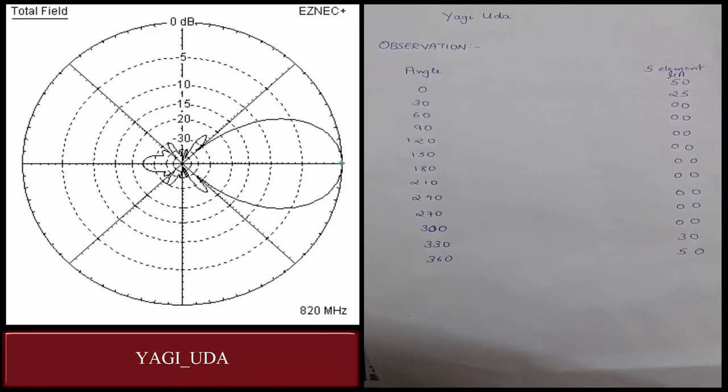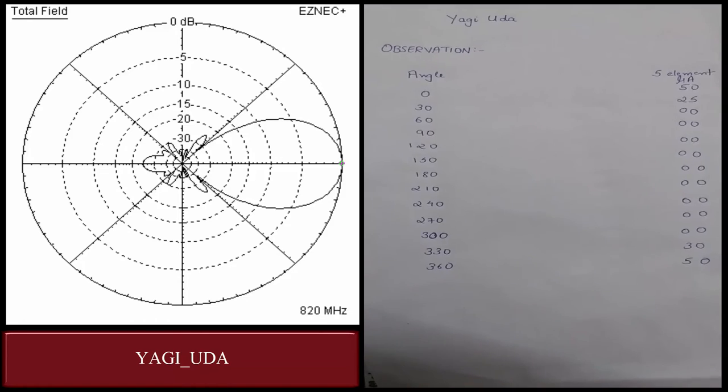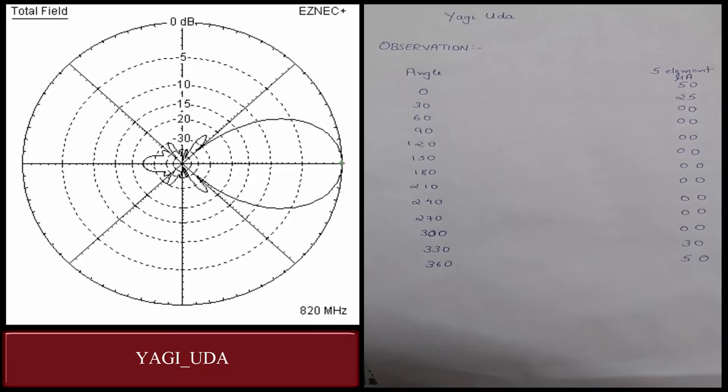Now considering these observed values, we are going to draw the graph. As we can see, the radiation pattern is towards only one side, which is the right-hand side.